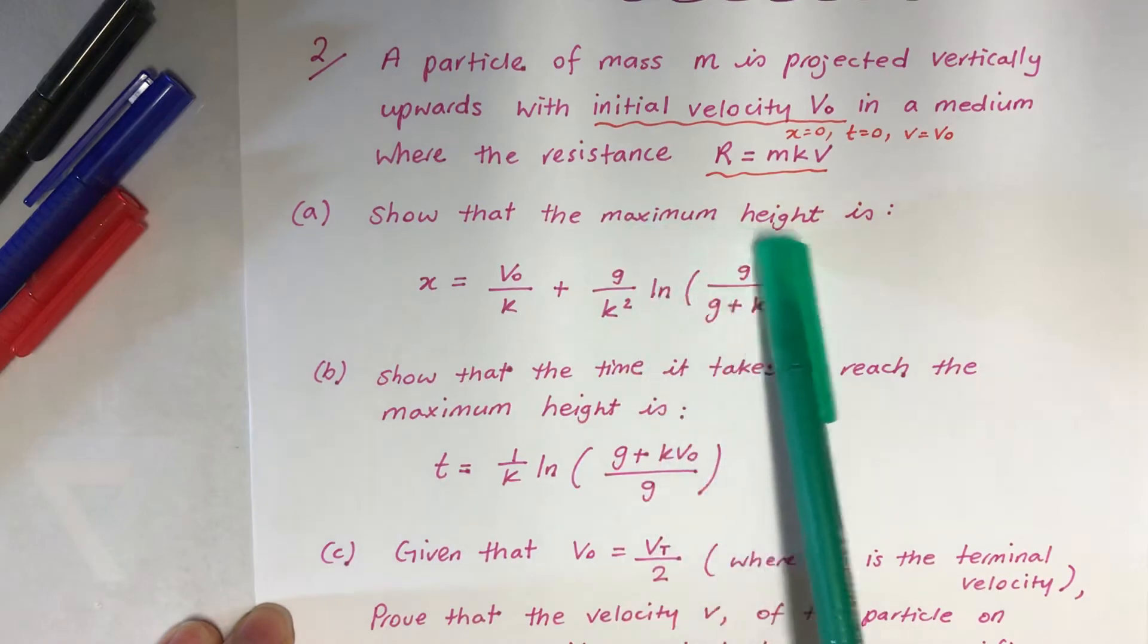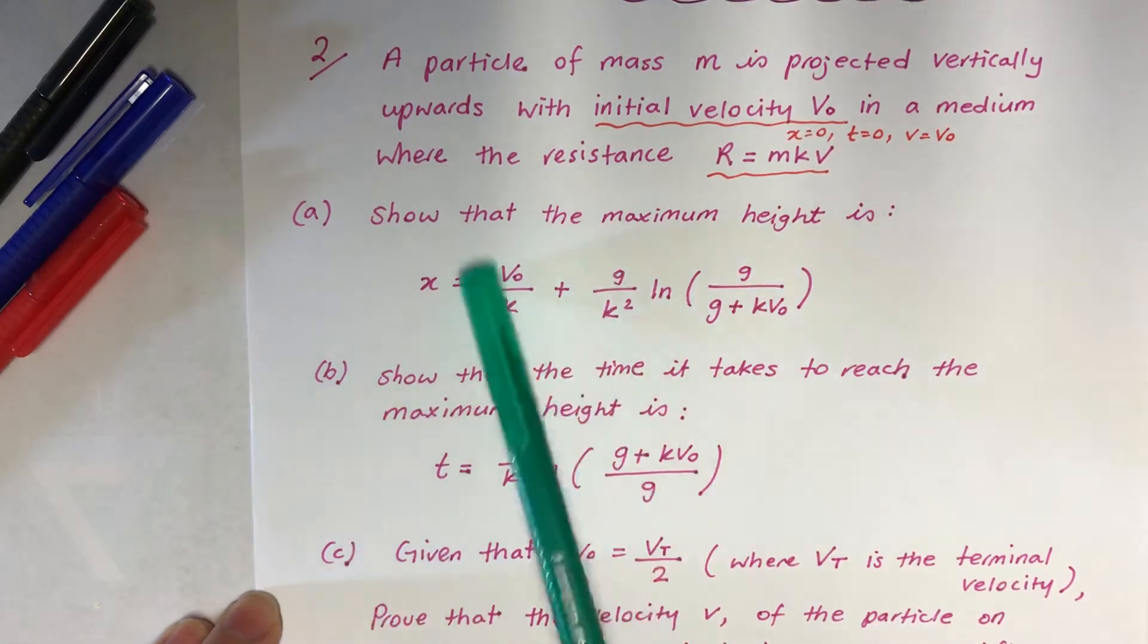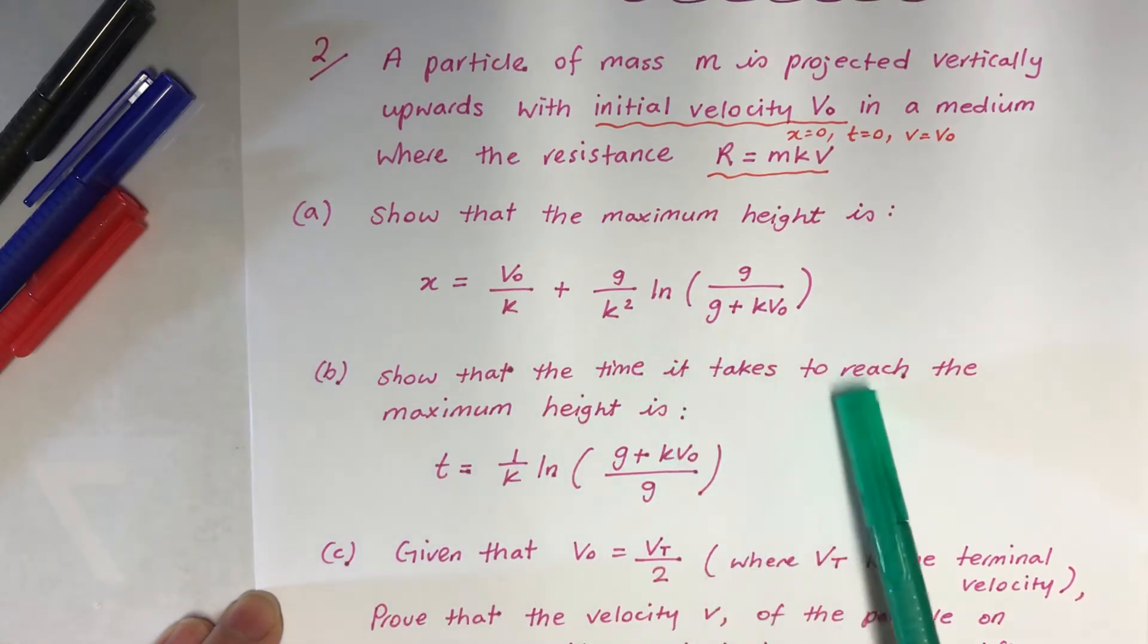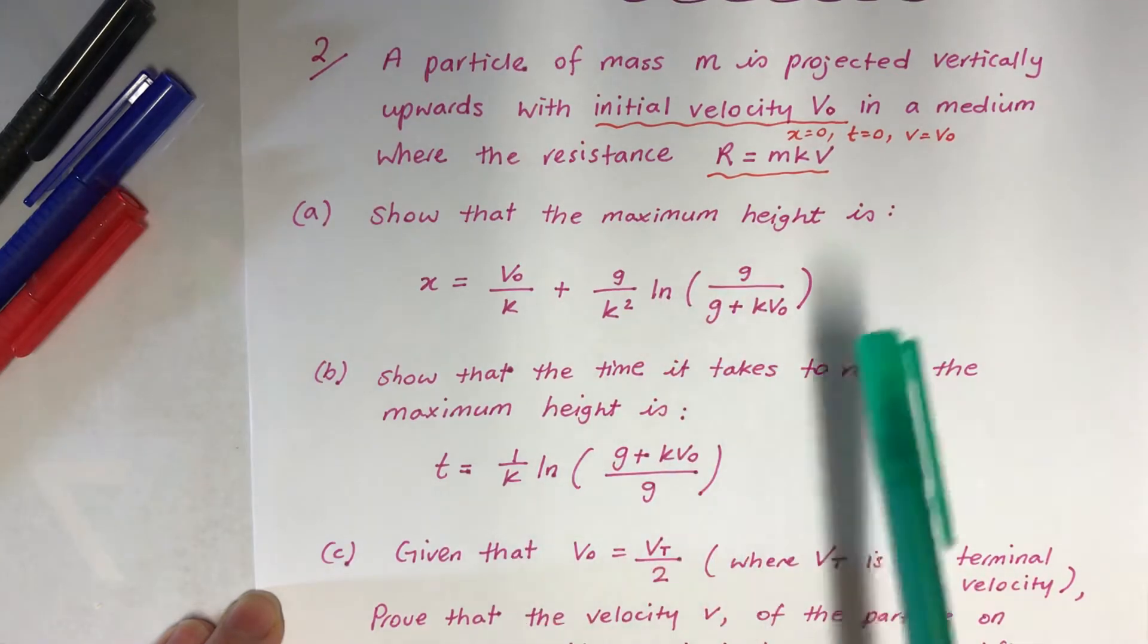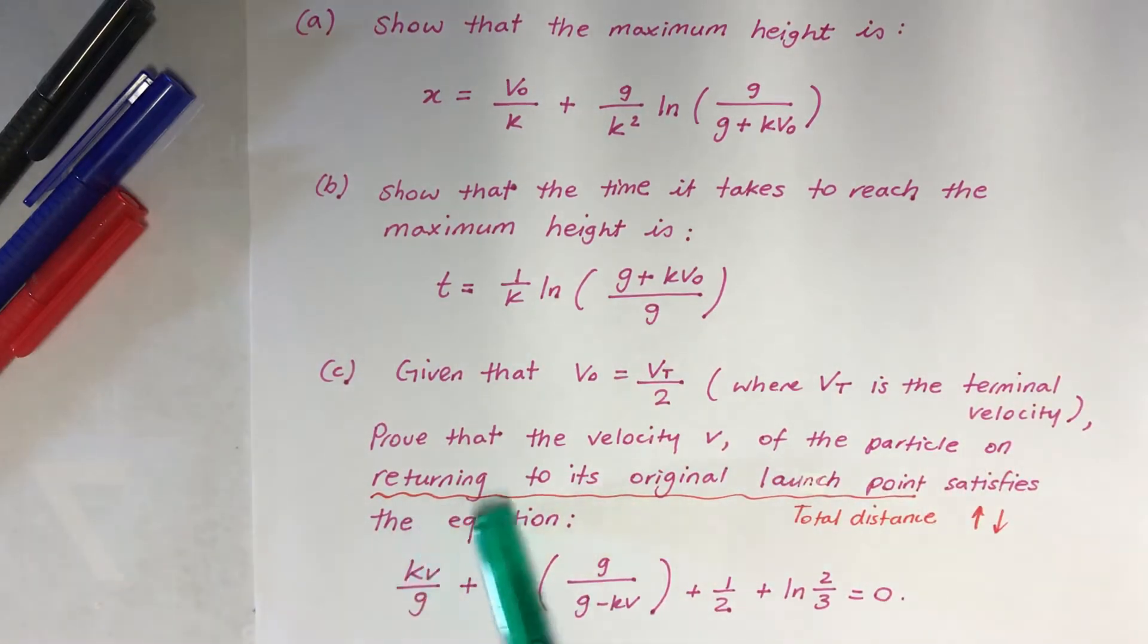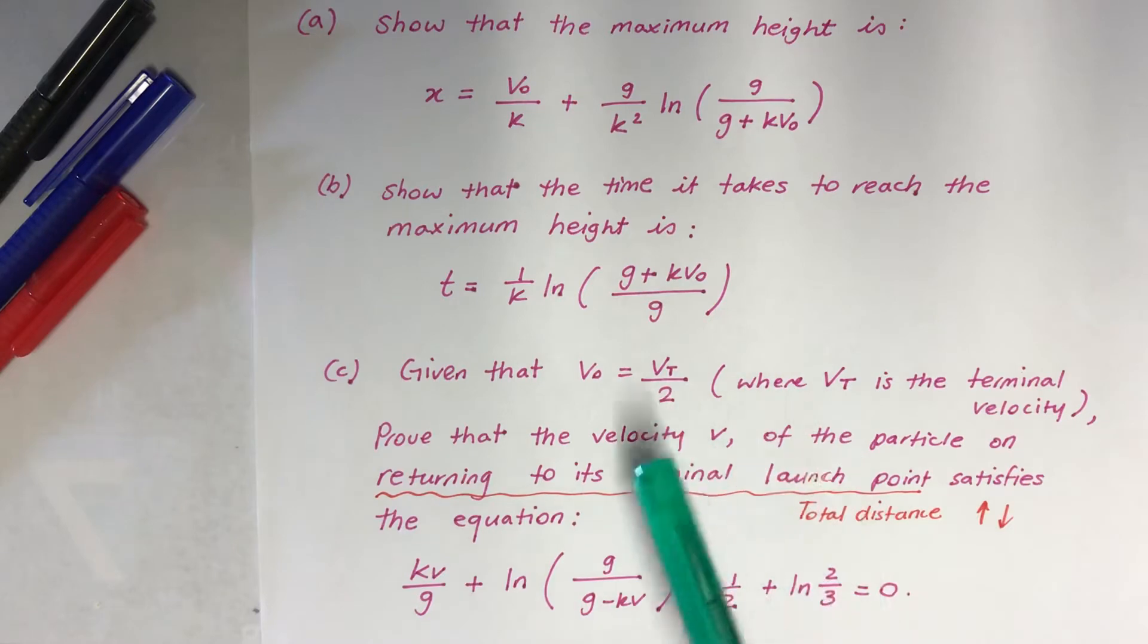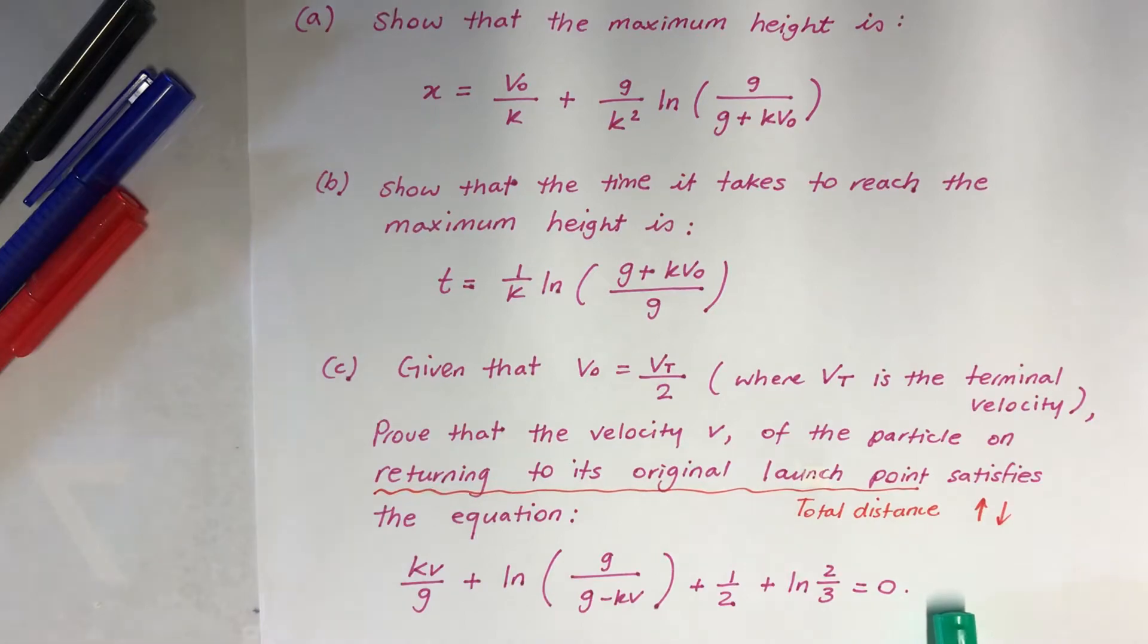Part A: Show that the maximum height. Now when you see maximum height straight away, I would actually underline there so V equals 0, and that's what you have to prove, X equals something. Part B: Show that the time it takes to reach the maximum height, so T equals question mark when V equals 0, but we can actually use something from part A. And part C: Given that VT is the terminal velocity, prove that the velocity V of the particle returning to its original launch point satisfies the equation. Now that means the total distance we're looking at, it's gone up and down.